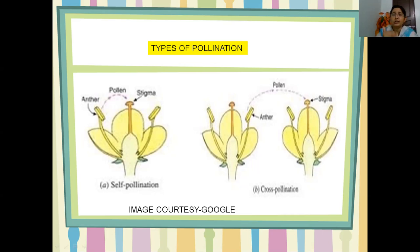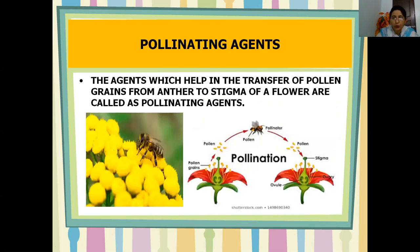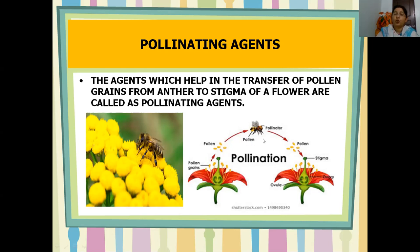A question arises: how are pollen grains traveling and who is taking them? These are called pollinating agents. Agents which help in the transfer of pollen grains from anther to stigma are called pollinating agents. Pollinating agents can be insects, birds, other animals, wind, or water.